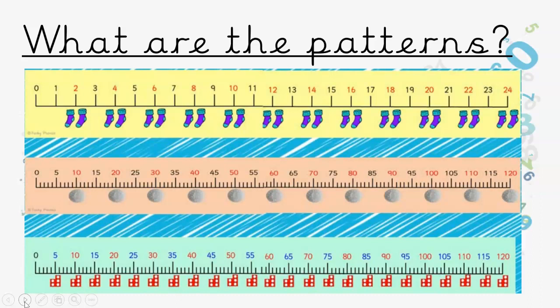Well, the top row is in twos — pairs of socks. The middle one is in tens — ten pences. And the bottom one is in fives. Count with me along the top.